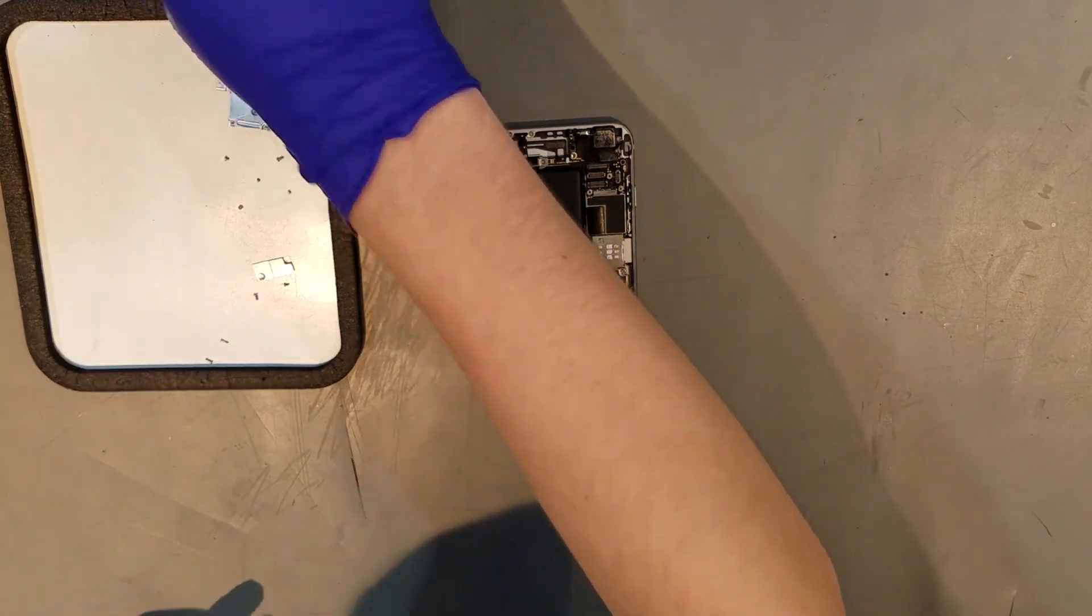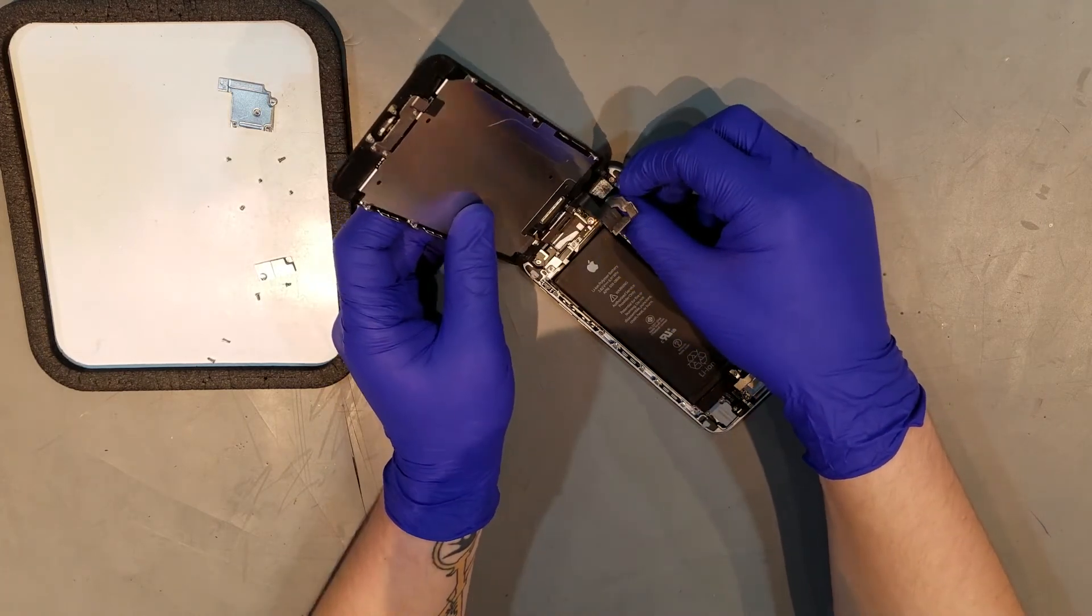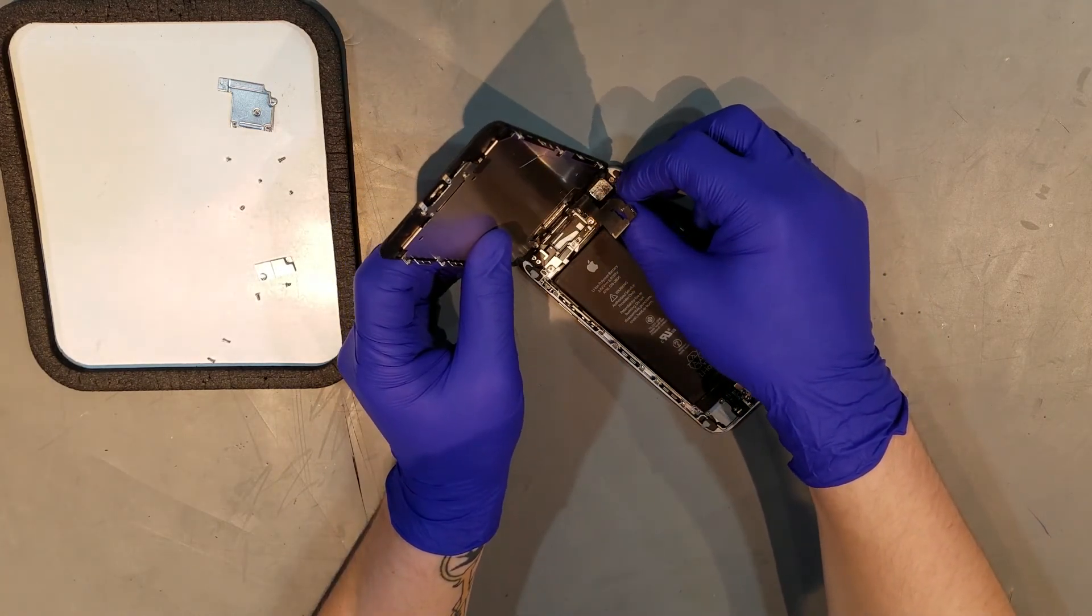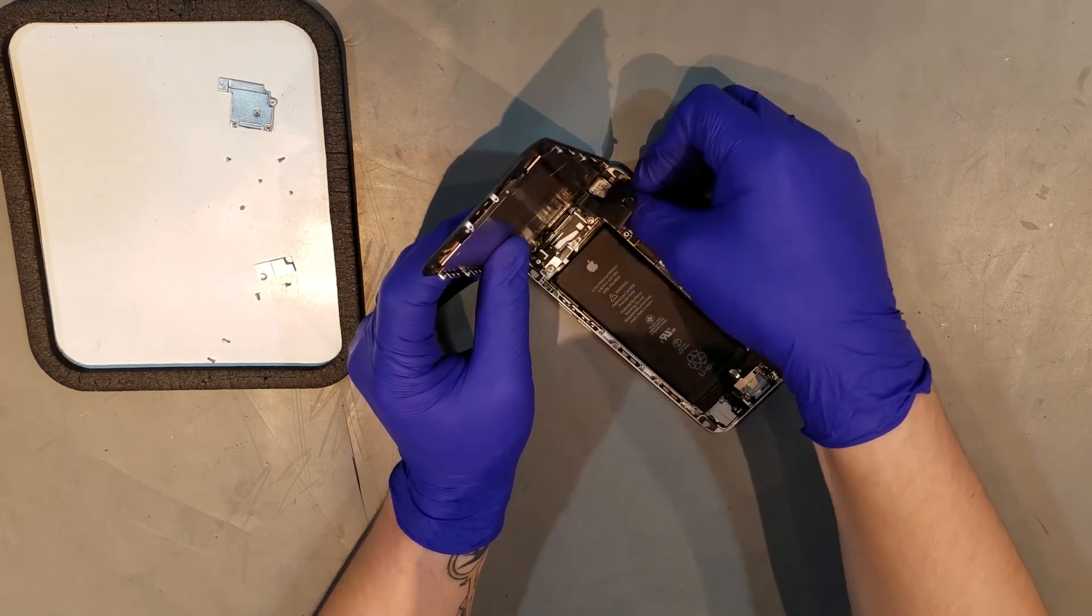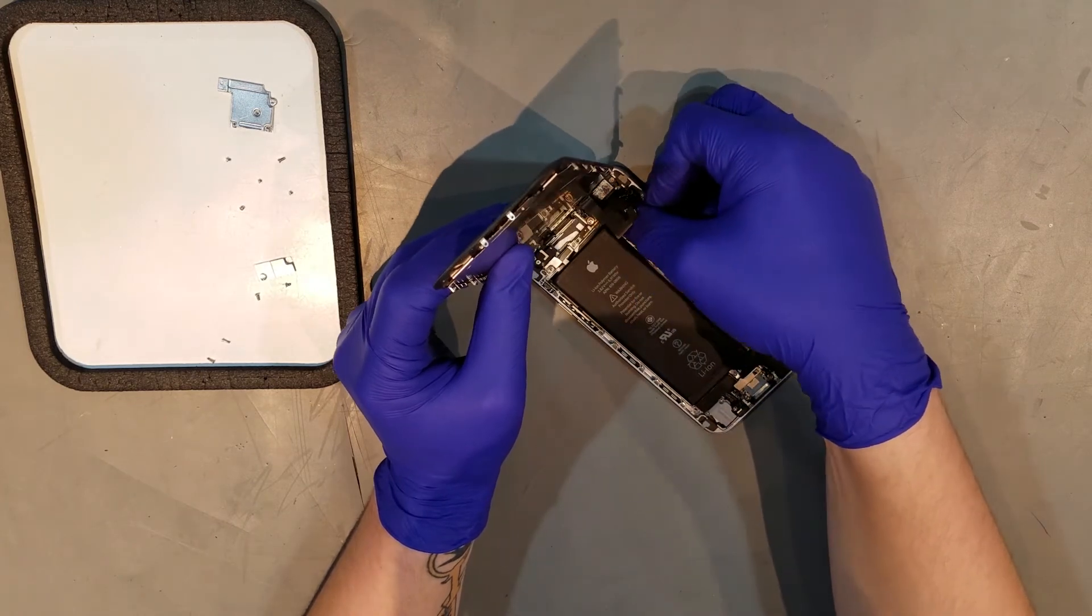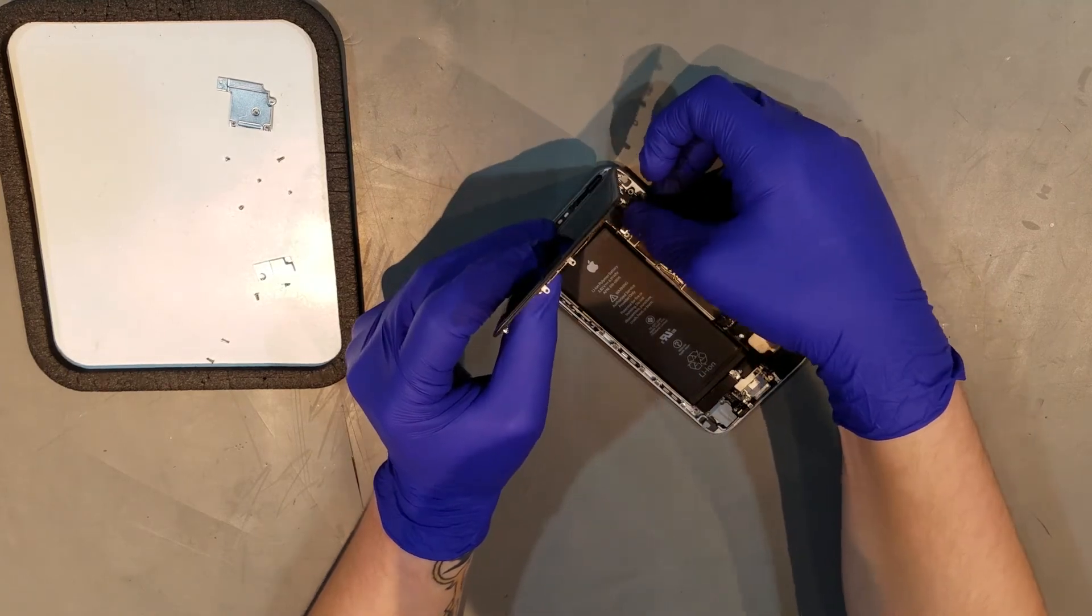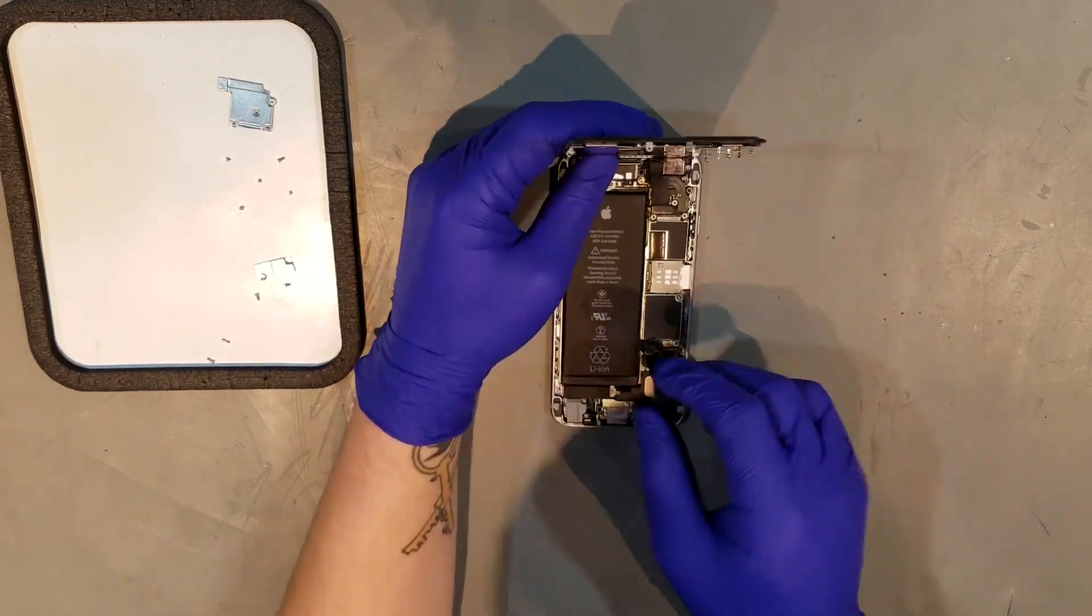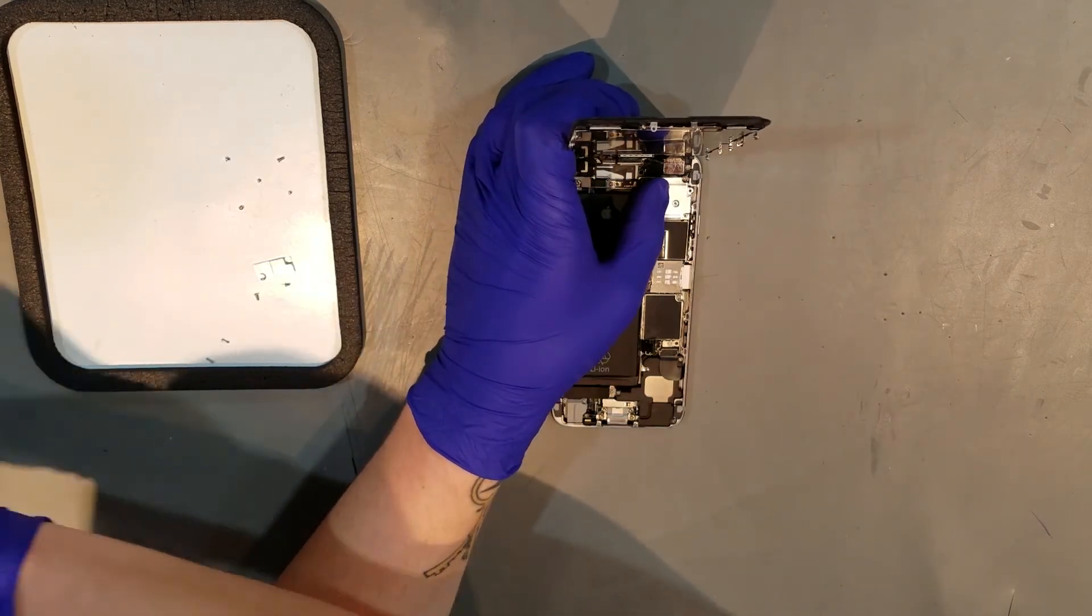When reattaching the display, the cables will clip in the following order: the clip for the digitizer, the clip for the LCD, the clip for the home button, and the clip for the front camera assembly. Once the clips are put back in in the correct order, the shield and its corresponding screws can be replaced.